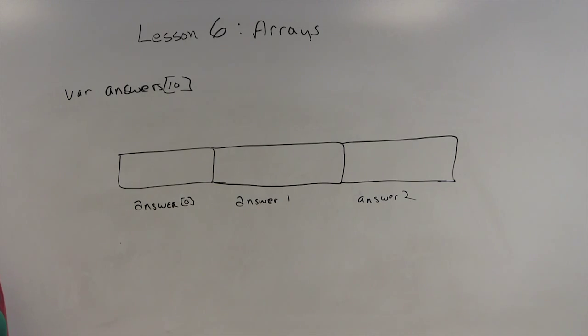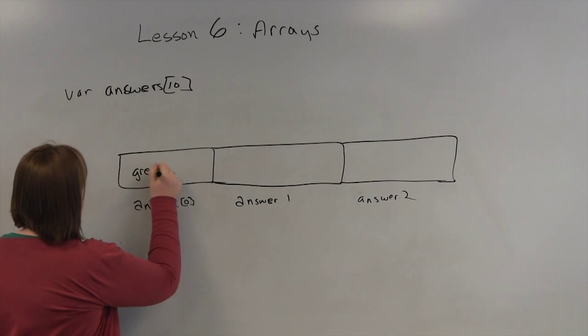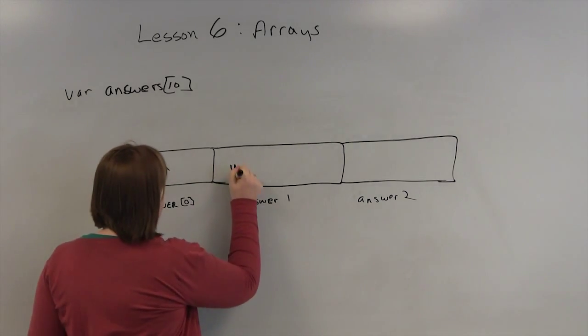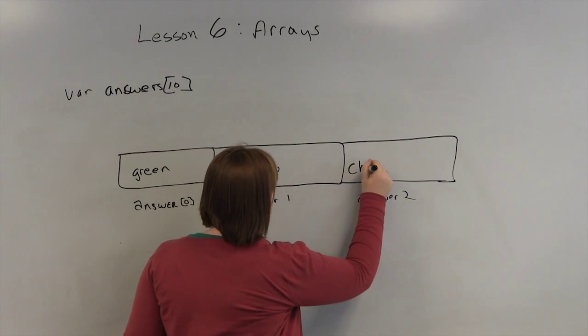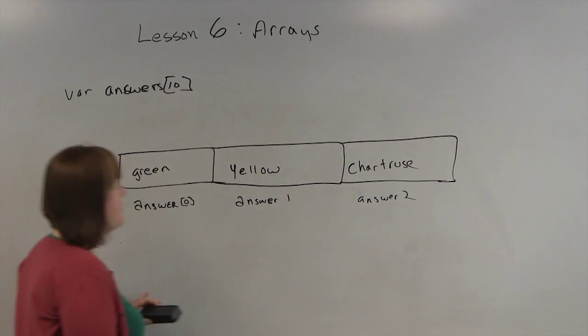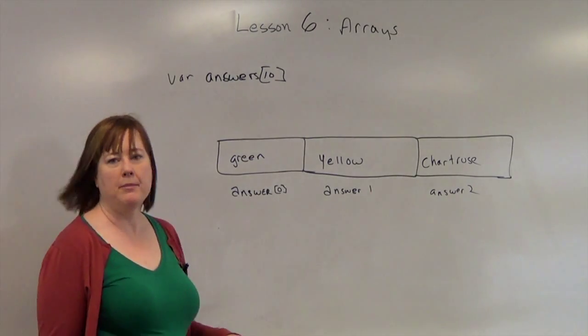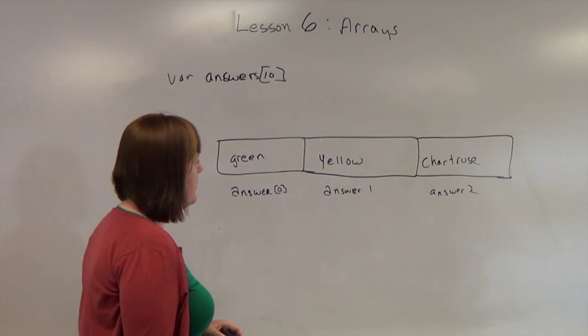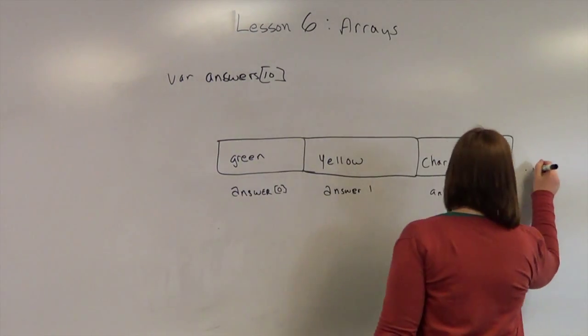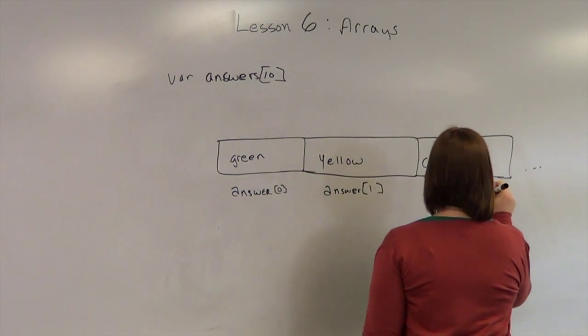And so we could put a different answer in each one. Let's say we were doing Hangman and the theme was colors. We could have green, yellow, chartreuse. I don't even know what color that is, but I believe it is a color. So you can store them, and then we can use them in lots of different ways. So this would go on to answer, and they should all have the little brackets around them, answer 9.